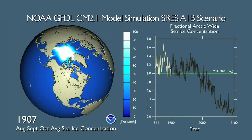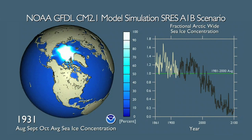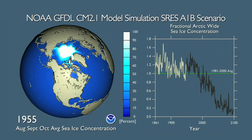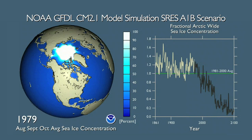This animation shows a computer climate model projection of how summertime sea ice in the Arctic Ocean could change during the 20th and 21st centuries. The model simulates a strong downward trend in the amount of summertime sea ice, in response to changing levels of greenhouse gases and aerosols in the Earth's atmosphere.